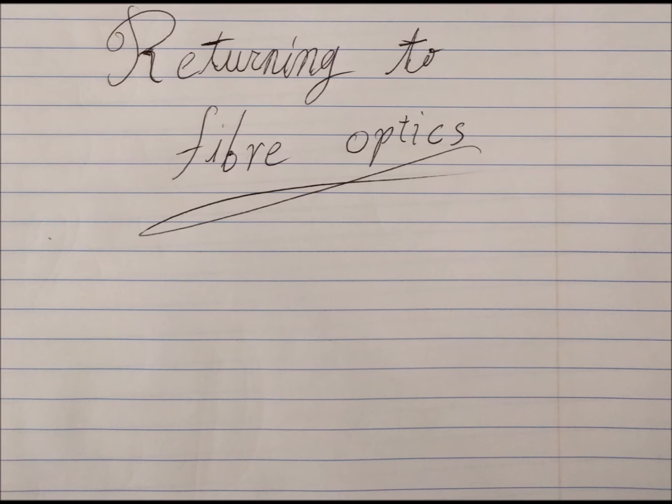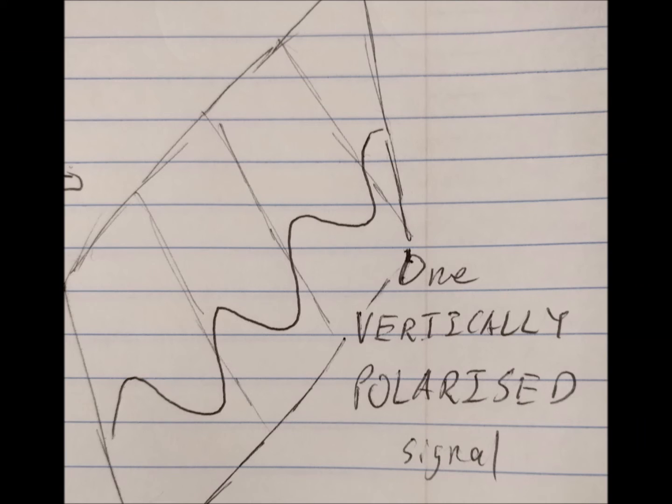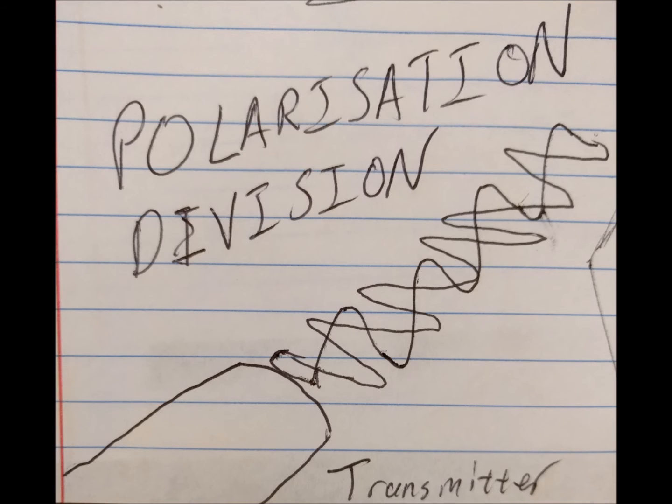Now, if you wanted to put this in a fiber optic, you could have one wave at a certain frequency going in a vertical polarization, and another wave at another frequency going at the horizontal polarization, and that's polarization division. One vertically polarized signal and one horizontally polarized signal.